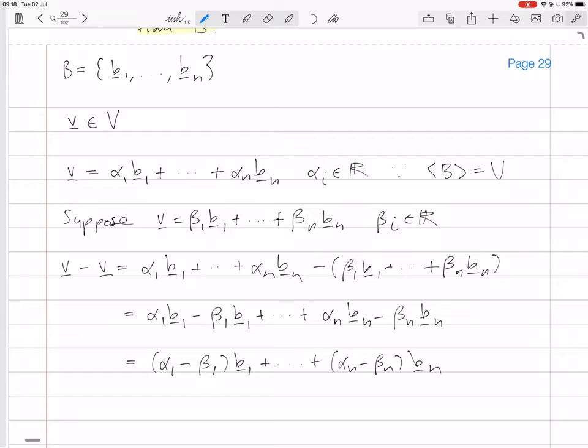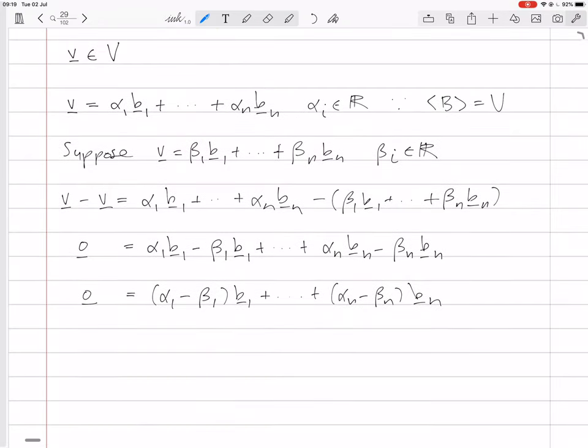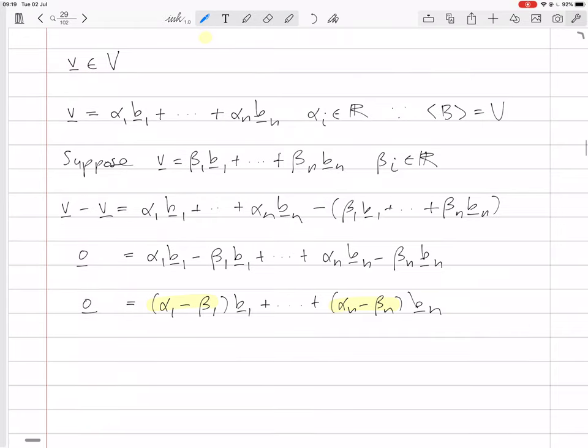Now, v minus v on the left-hand side is just zero. So we have a linear combination of the vectors from the basis equal to zero. But a basis is linearly independent, so that means that